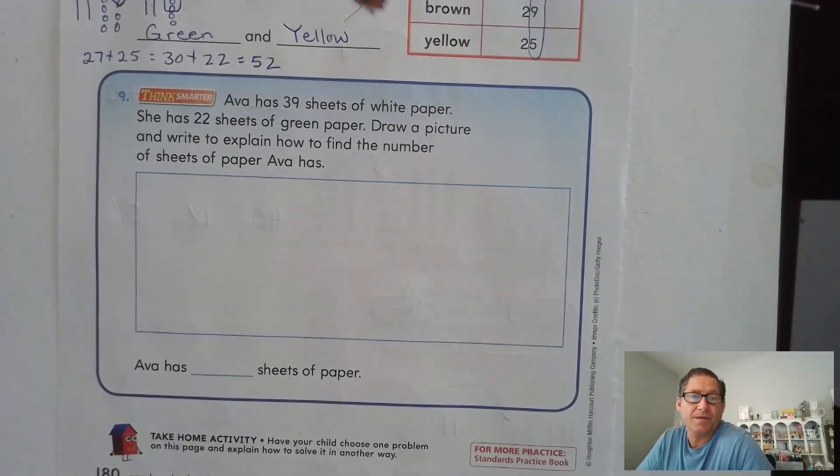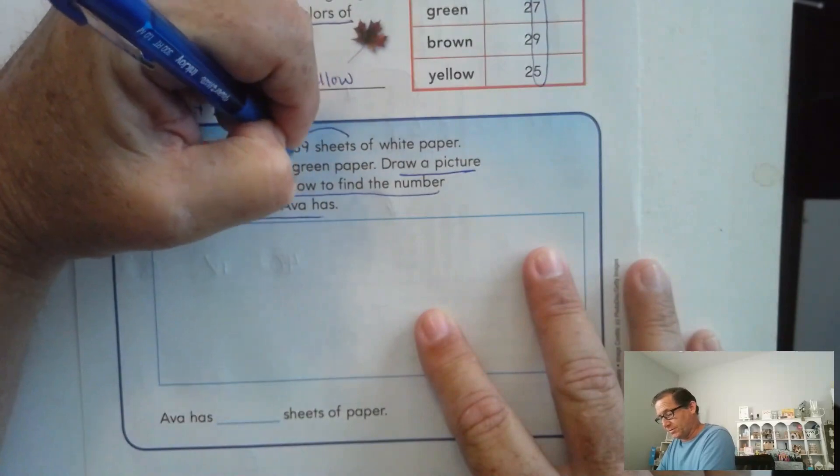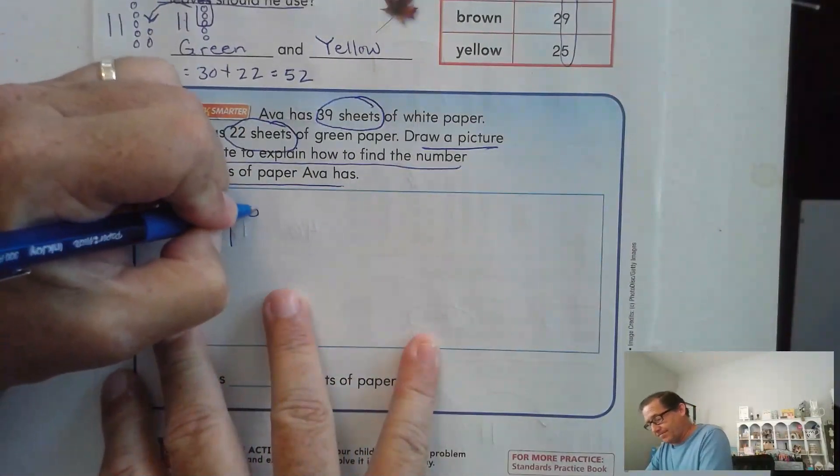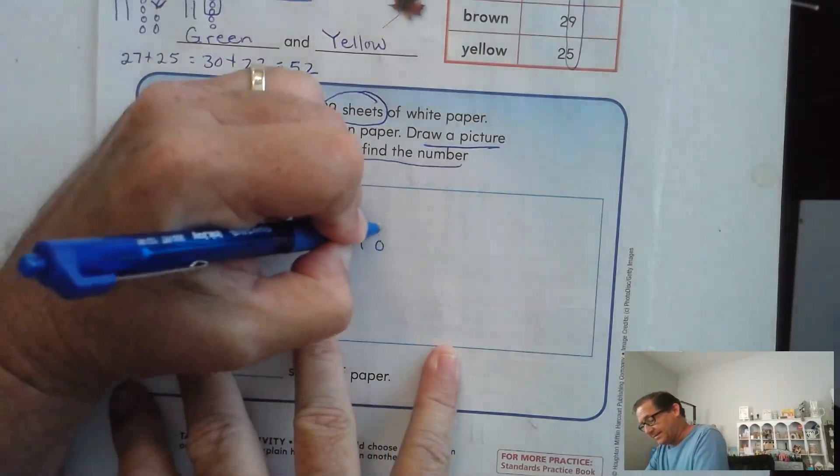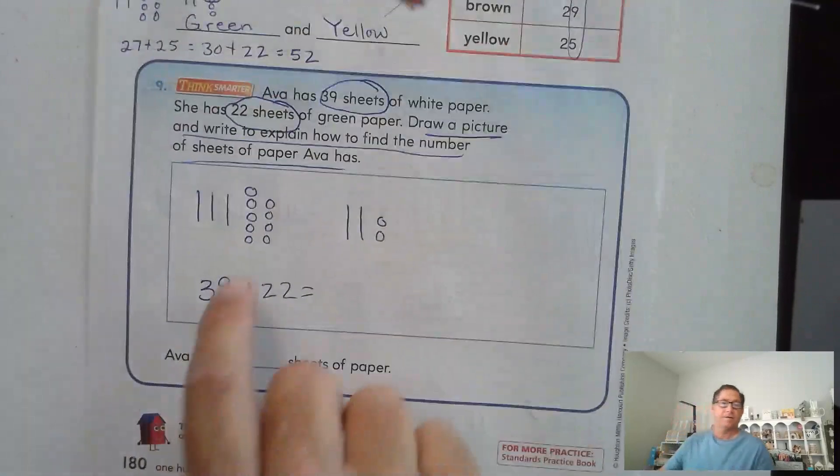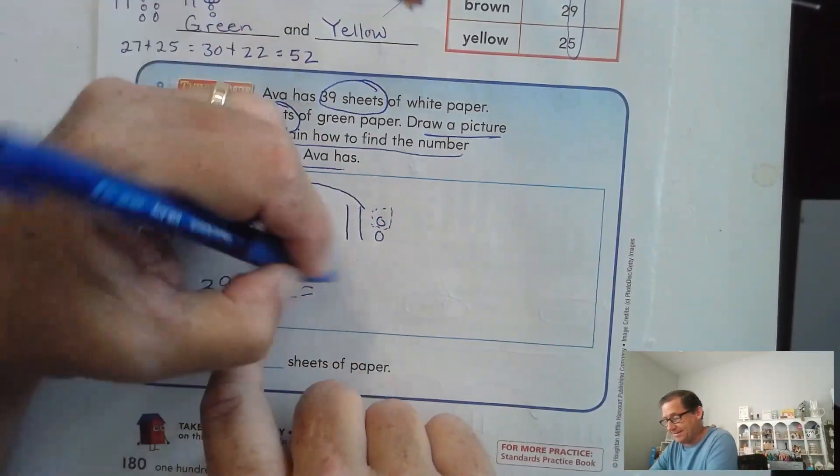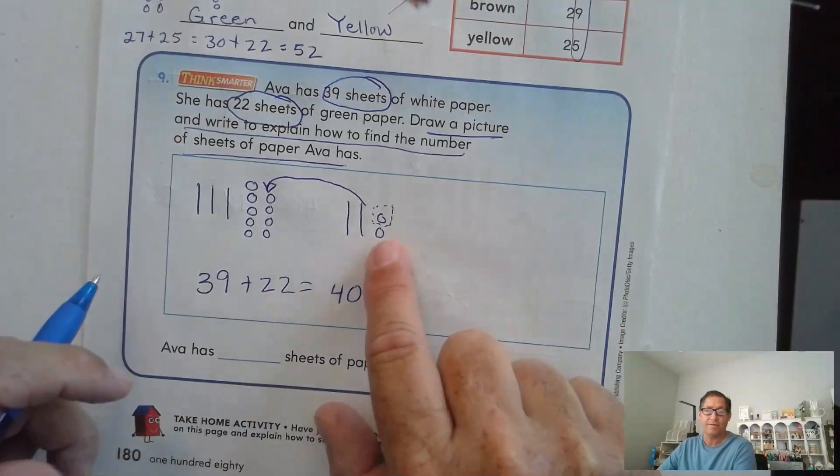So Ava has 39 sheets of white paper. She has 22 sheets of green paper. Draw a picture and write to explain how to find the number of sheets of paper Ava has. So we know that she has 39 and 22. How do you show 39? Three tens and nine ones. How do you show 22? Two tens and two ones. So 39 plus 22. Now 39, all I have to do is add one to make that into the next 10. So instead of 39, let's say 40 plus what's left. Two tens is 20 plus one is 21.